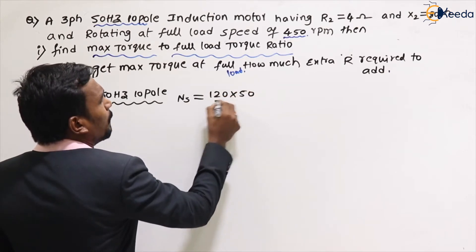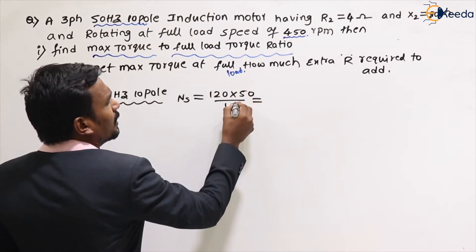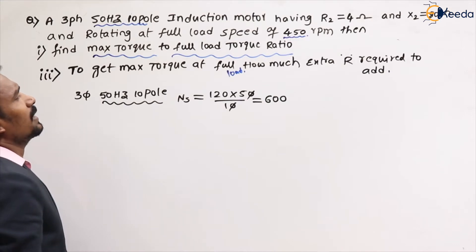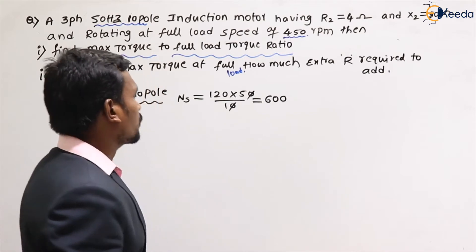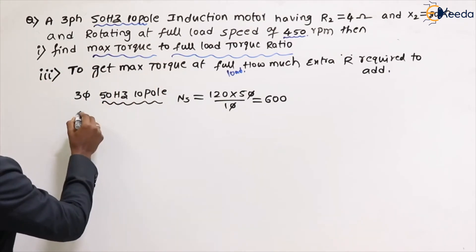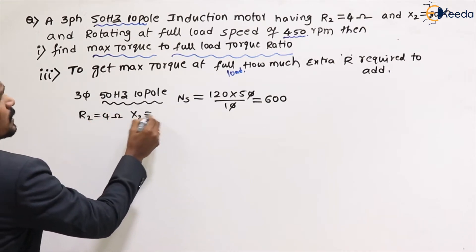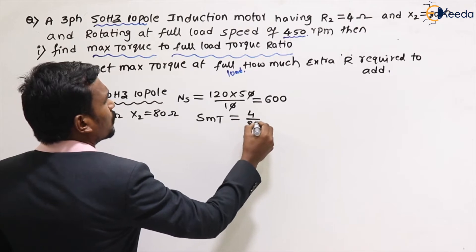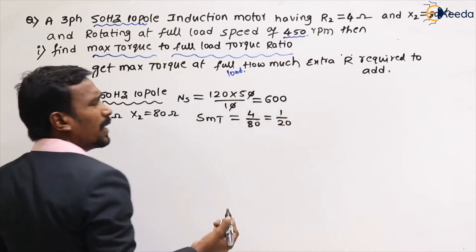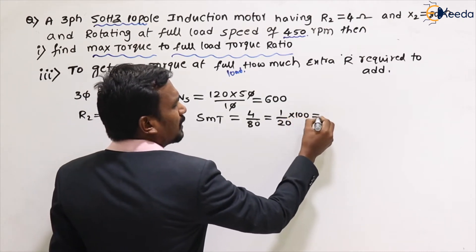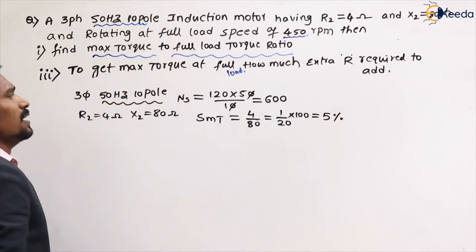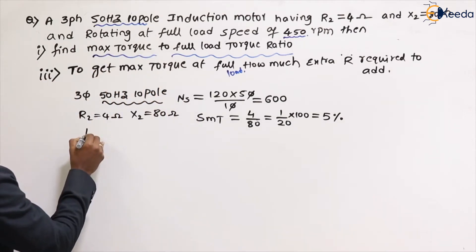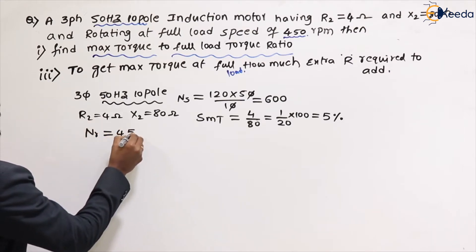Synchronous speed = 120f/P = 120×50/10 = 600 rpm. Next, r2 = 4 ohms and x2 = 80 ohms. So slip at maximum torque, s_mt = r2/x2 = 4/80 = 1/20 = 5%.